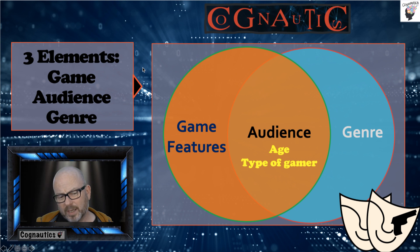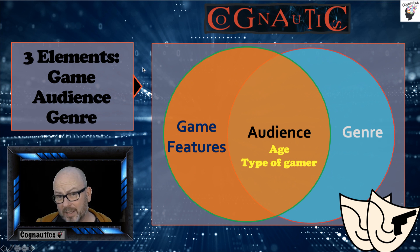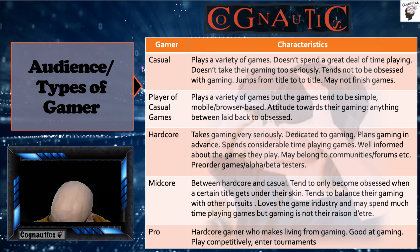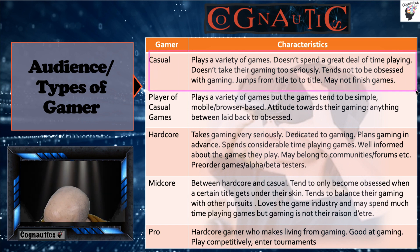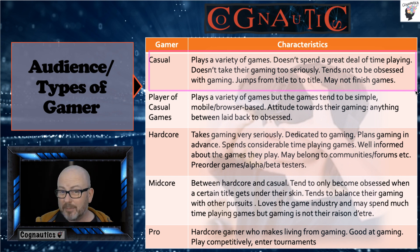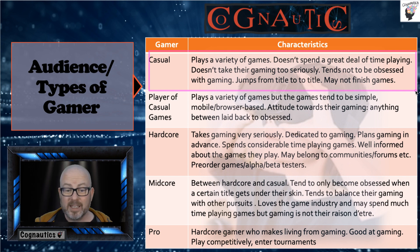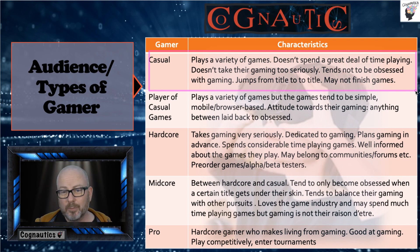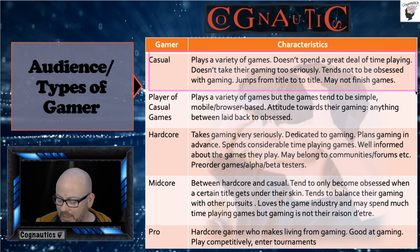We're going to look at audience first, and think about the type of gamer who would play the games you've selected — the same games you chose in P1. The casual gamer is somebody who will play a variety of games. They pick them up and put them down as they see fit. They're not obsessed with games but they enjoy playing them. They don't take it too seriously, may not finish games, and may jump from title to title. Typically they'll be playing on a mobile device or browser. That's the casual gamer.